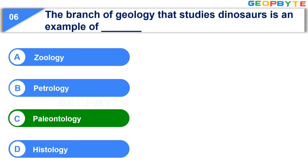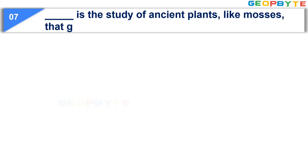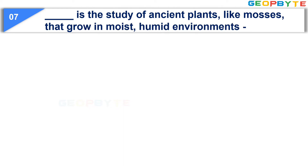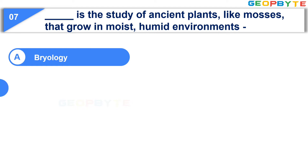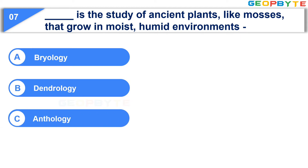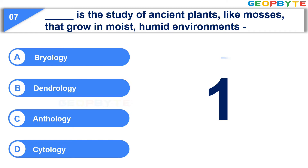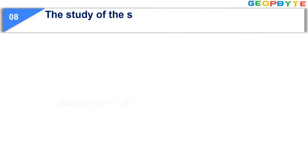The seventh question is: Dash is the study of ancient plants like mosses that grow in moist, humid environments. Option A: Bryology. Option B: Dendrology. Option C: Anthology. Option D: Cytology. Your time starts now. Your time is up and the correct answer is Option A: Bryology.